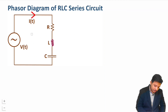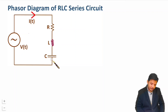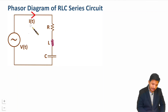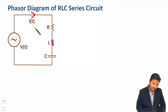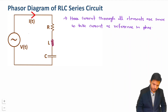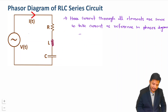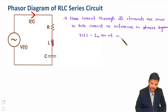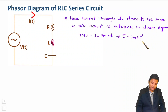In an RLC series circuit, since all elements are in series, the current passing through all three elements is the same. So I'll consider current as the reference phasor for this RLC series circuit. Let us say current i(t) = Im sin(ωt). In terms of phasor, I-bar equals Im at angle 0°, meaning it is the reference phasor.